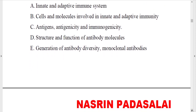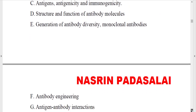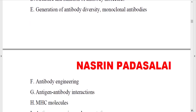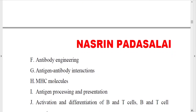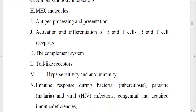Unit four is Immunology. You need to know about cells and organs of the immune system, antigen antigenicity and immunogenicity, structure and function of antibody molecules, generation of antibody diversity, monoclonal antibodies and antibody engineering, and antigen-antibody interactions. This includes different types of immunological assays based on antigen-antibody interaction such as precipitation, agglutination, and ELISA. You also need to know about MHC molecules.